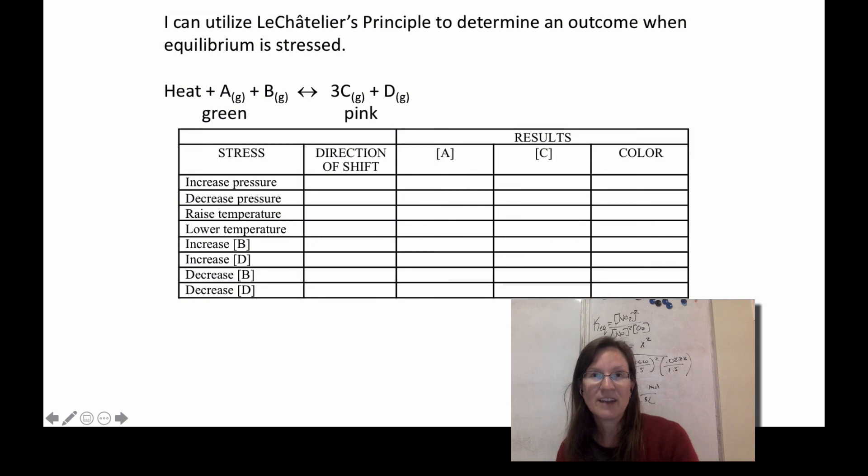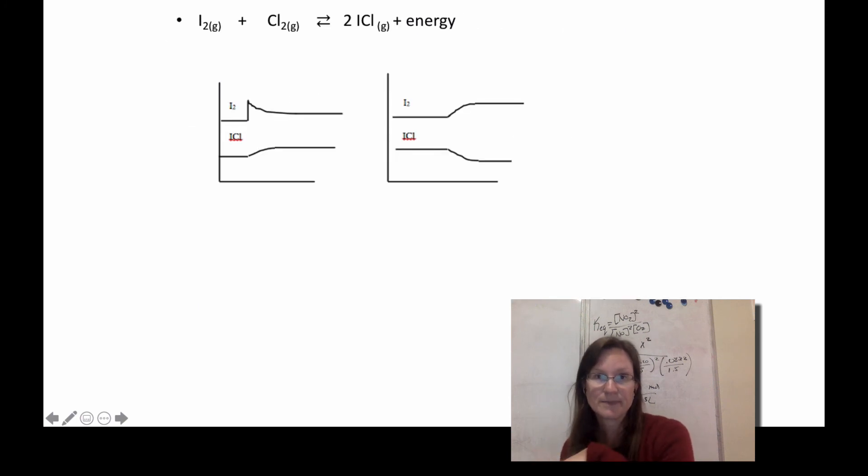So for this particular one, if I increase pressure, I'm going to shift to the side with less stuff. So that means I'm going to shift to favor reactants and make it green. If I decrease pressure, on the other hand, I'm going to shift to put more things in. So I'll shift product and it'll become pink. That's Le Chatelier. If you're having trouble with that still, do some of the review questions on Le Chatelier.